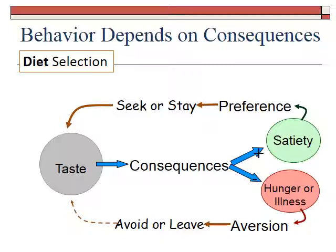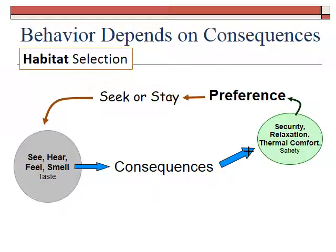But there's a whole lot more to a habitat than food, so let's expand the model. An animal in an environment will see, hear, feel, smell, and taste the environment — they taste foods, feel the climate, smell, hear sounds, and see the sights. Then there are consequences to staying in that area. If those consequences are positive — the animal feels secure, relaxed, thermally comfortable, and has reached satiety with the energy and nutrients it needs — then the animal forms a preference for that habitat and decides to stay there or seeks it out later.